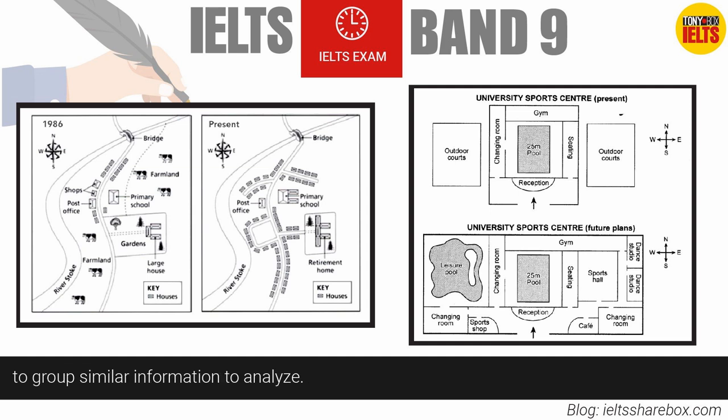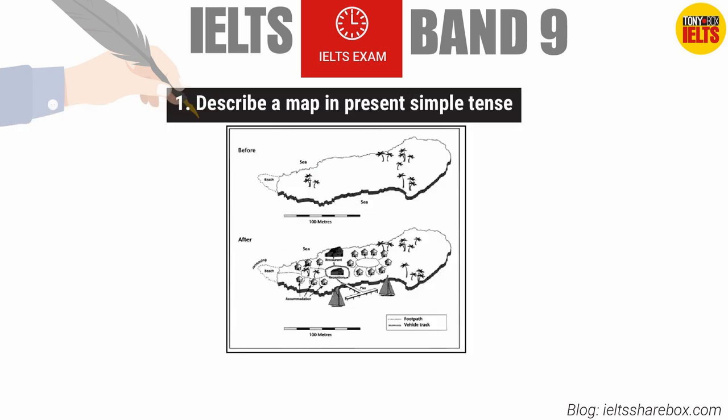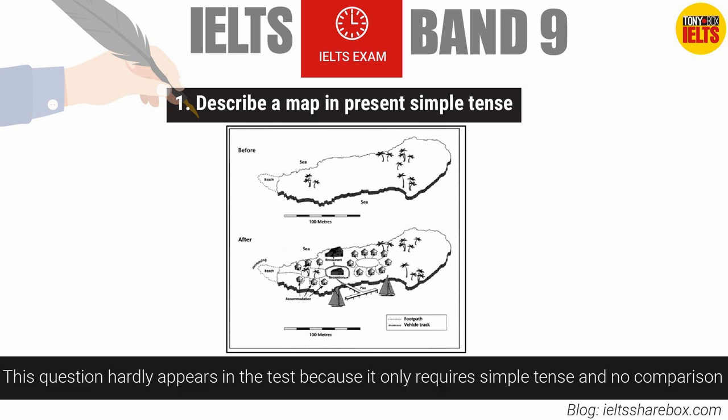It is important to separate the map into comparative areas which can be easily seen on the map, and to group similar information to analyze. Normally, a map has three kinds of questions. The first is to describe a map in the present simple tense — this question hardly appears in the test because it only requires simple tense and no comparison.